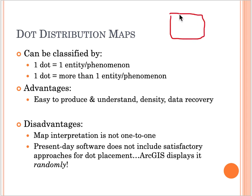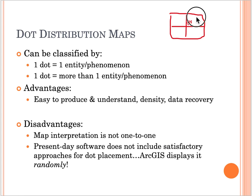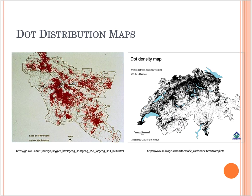For example, if I have four states within a country and the population density is in reality densely populated in the bottom corner of a state, GIS will instead place dots randomly within that state rather than showing the accurate representation of the dense area. That is one disadvantage of dot distribution maps.